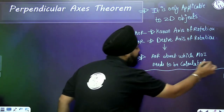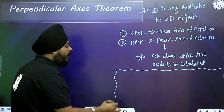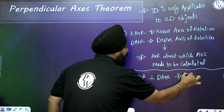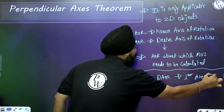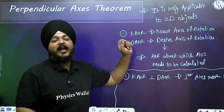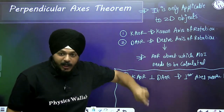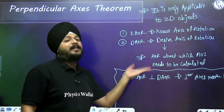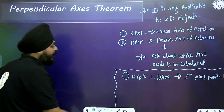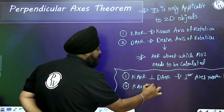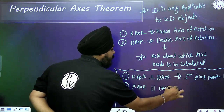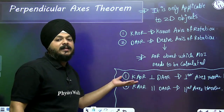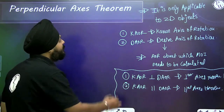Simple rule: if KAOR is perpendicular to DAOR, use the perpendicular axis theorem. If the known axis of rotation is parallel to the desired axis of rotation, use the parallel axis theorem. Mark this: the perpendicular axis theorem is only applicable for 2D objects. The parallel axis theorem is applicable for all objects — both 2D and 3D.